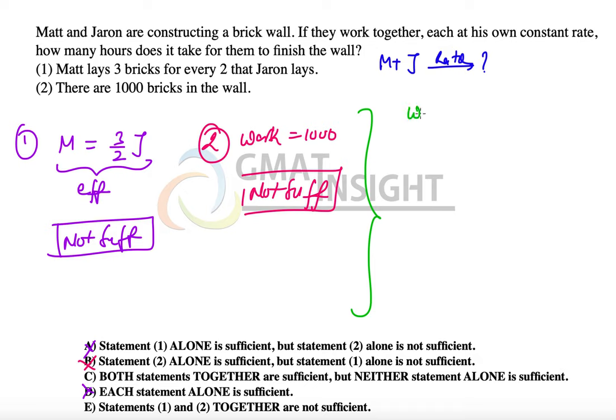Now we know that the total work equals 1000 bricks, and we also know that for every two bricks laid by Jaren, Matt lays three bricks. That means the ratio of the work of Matt and Jaren equals 3:2.